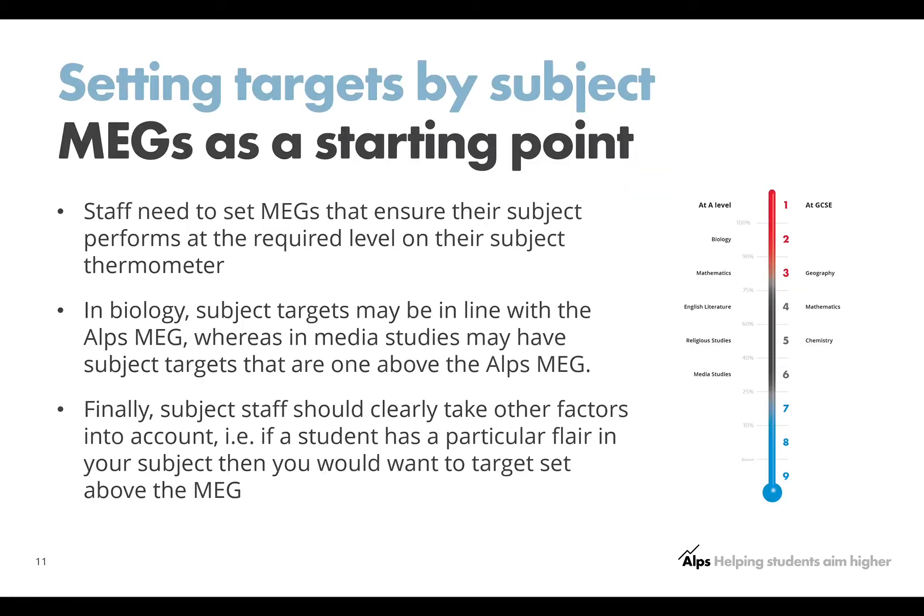So what you have to do in terms of target setting is understand that, and then set targets by your subject according to those MEGs in a slightly different way. Let's take a biology teacher. They might look at their unique thermometer and say: if all of my students get the MEG, then that will put me in the top 10% of departments nationally. That's quite aspirational, so you might target set at that MEG — that might be your subject target for biology.